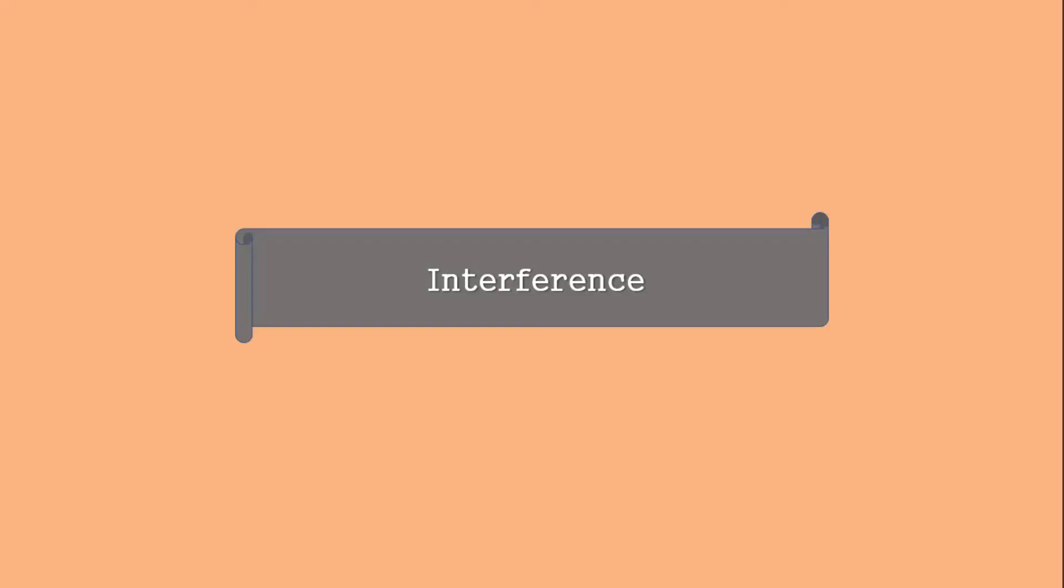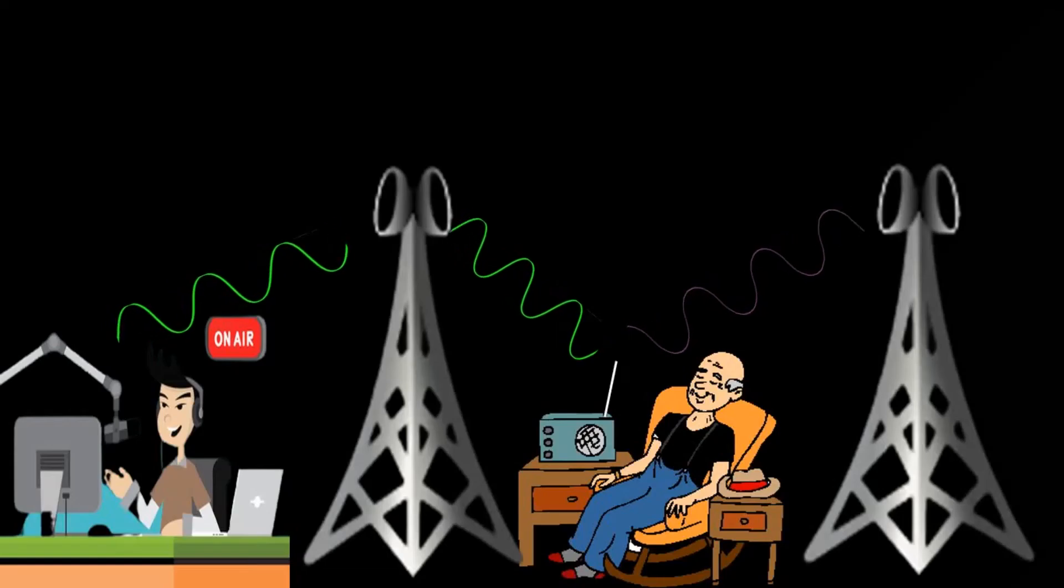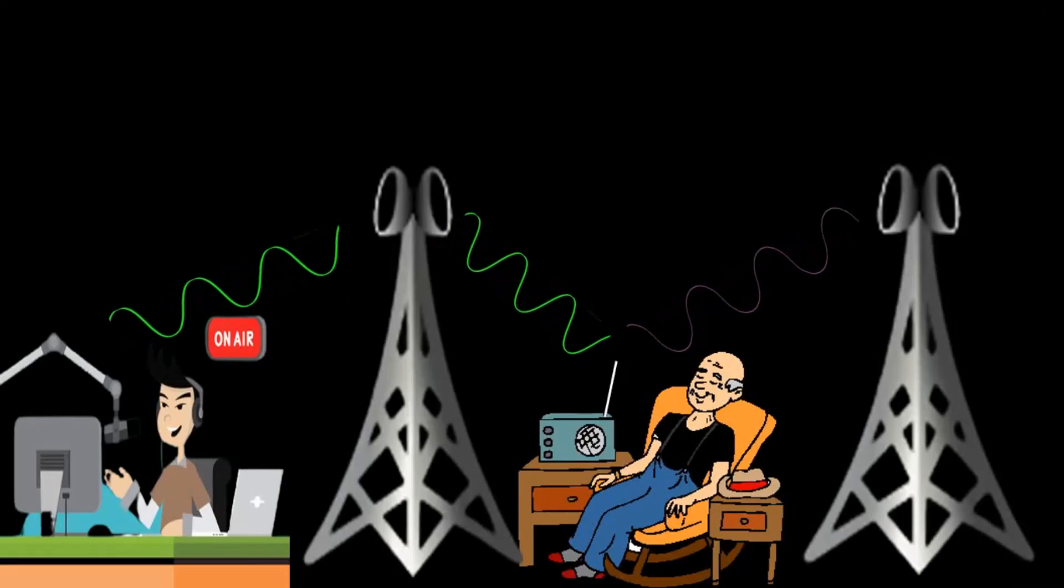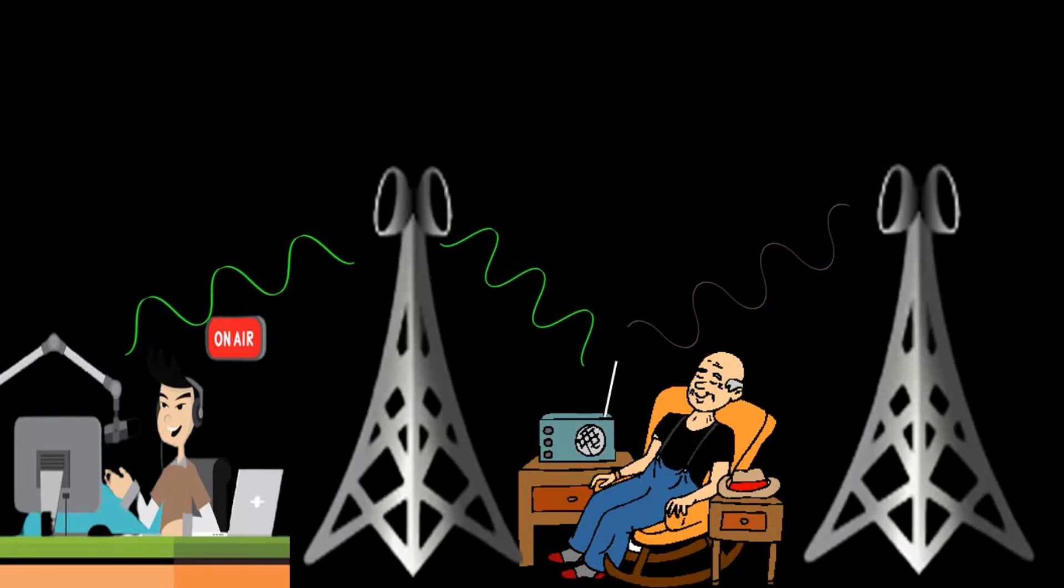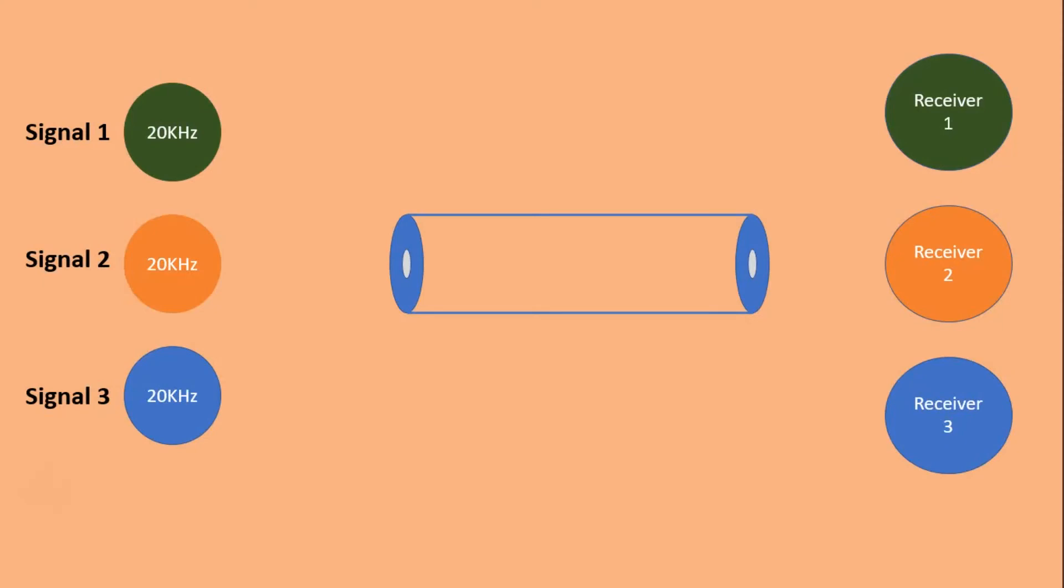Another advantage is avoiding interference. As you can see, two different signals from two different base stations can interfere with each other if they have same frequency. Let us say three different voice signals which are at same frequency and they are transmitted without modulation through a single channel. Then there may be interference between them and at the receiver we will not get the transmitted signal properly.